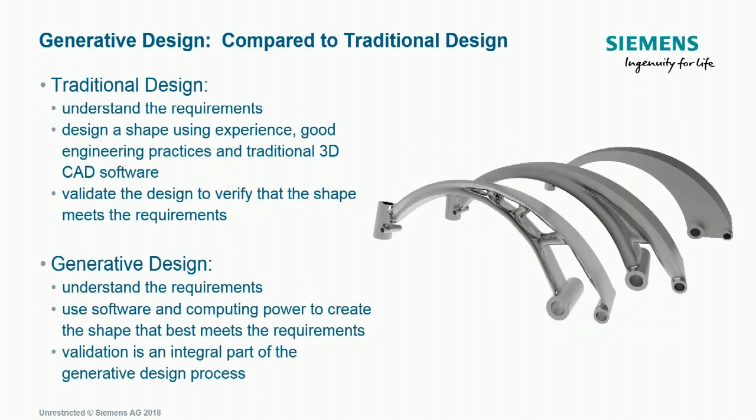Let's start by introducing generative design by comparing it to traditional design. With traditional design, the first step is to understand the requirements and then apply good engineering practices and your experience using traditional 3D CAD software to design a shape that meets the requirements. Then you validate the design using computer-based stress analysis and/or physical prototypes, and you may then need to loop back and modify the design.